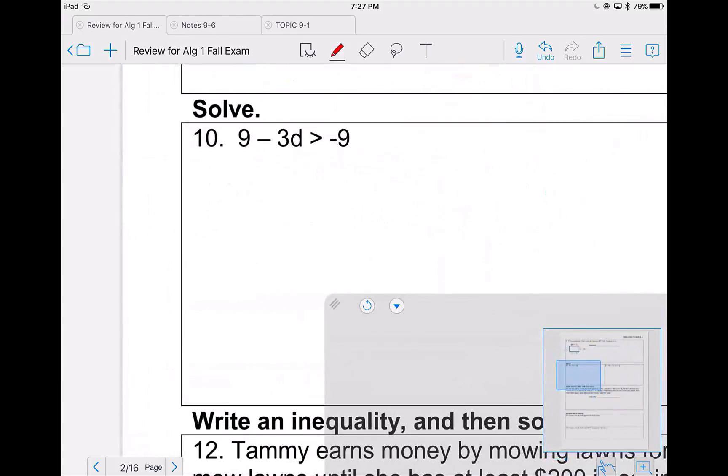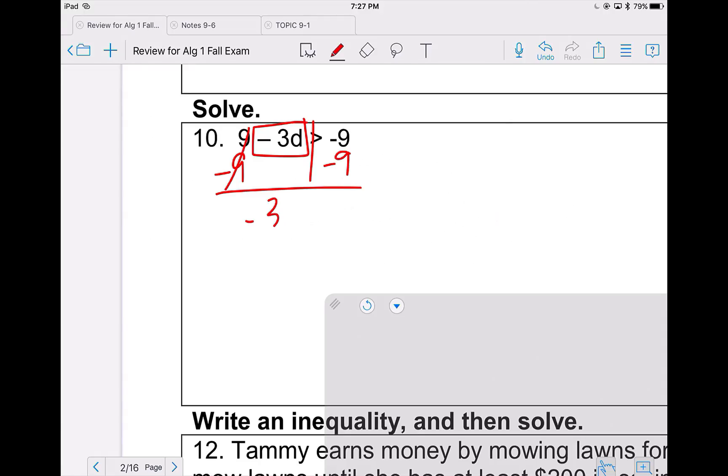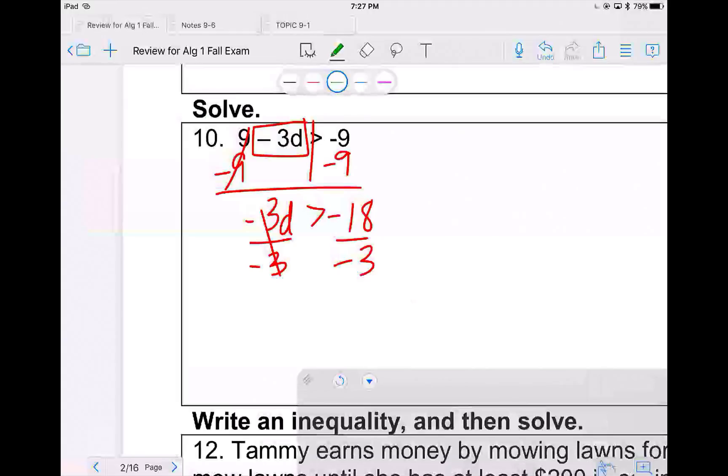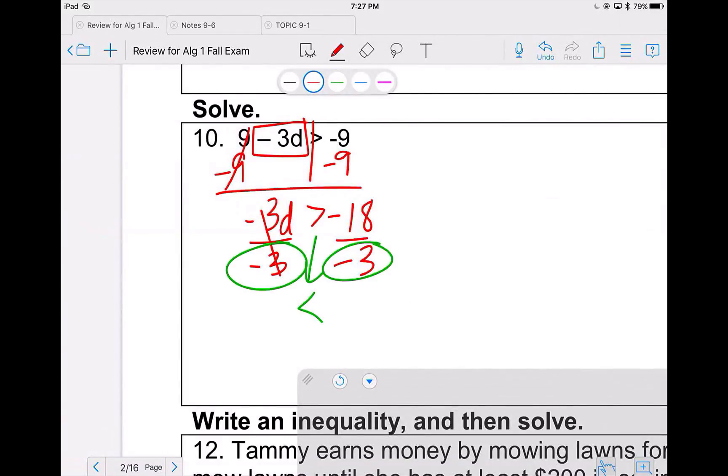Problem 9. We're solving for d. So we move 9 to the other side. So negative 3d is greater than negative 18. Divide both sides by a negative. Because I divided by a negative, my sign is going to flip. And negative 18 divided by negative 3 is 6. So d is less than 6.